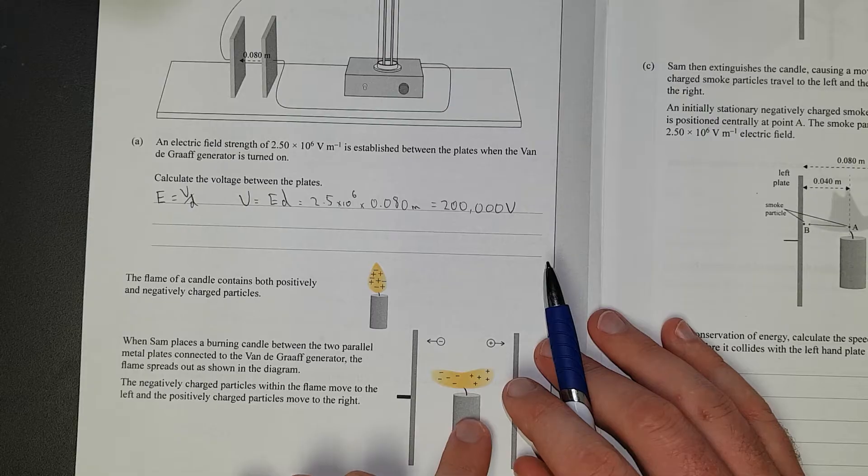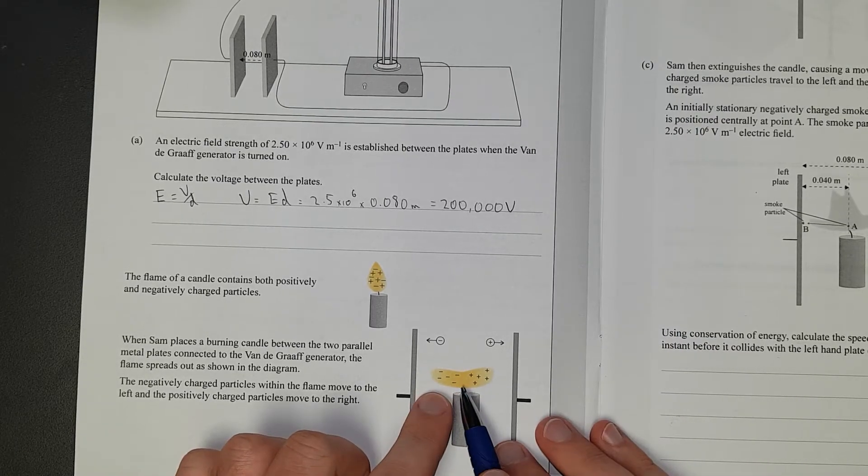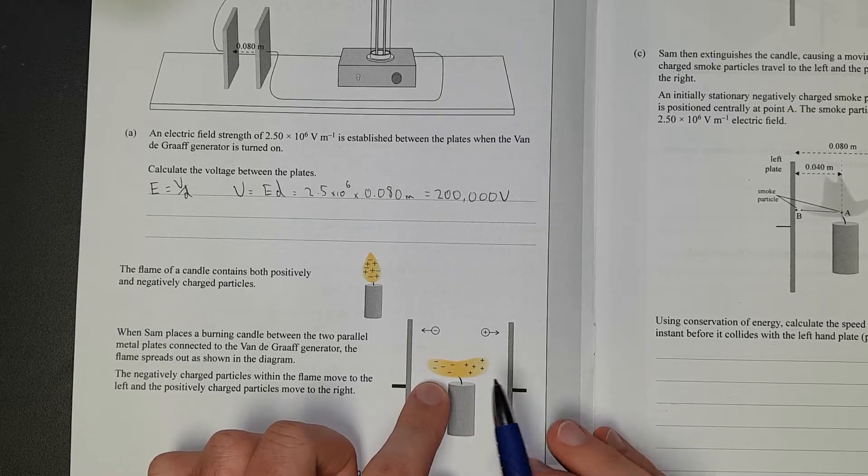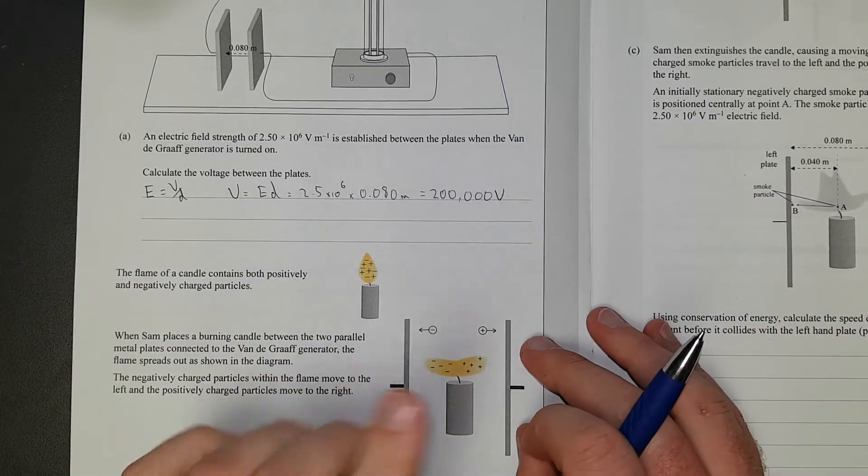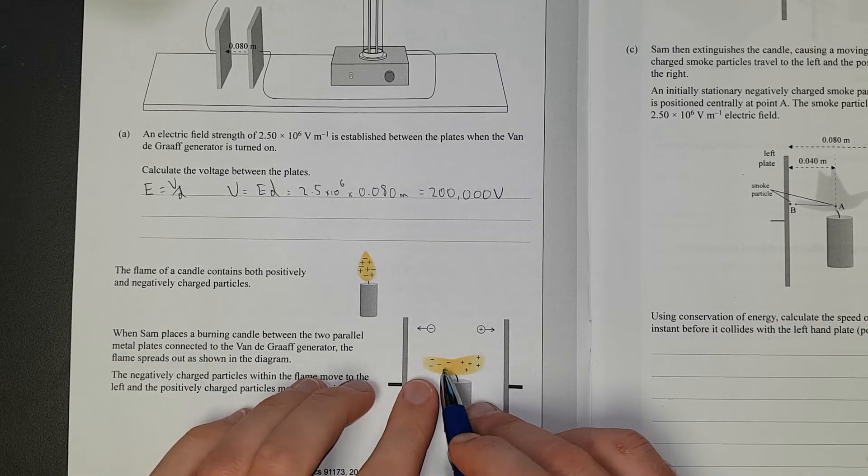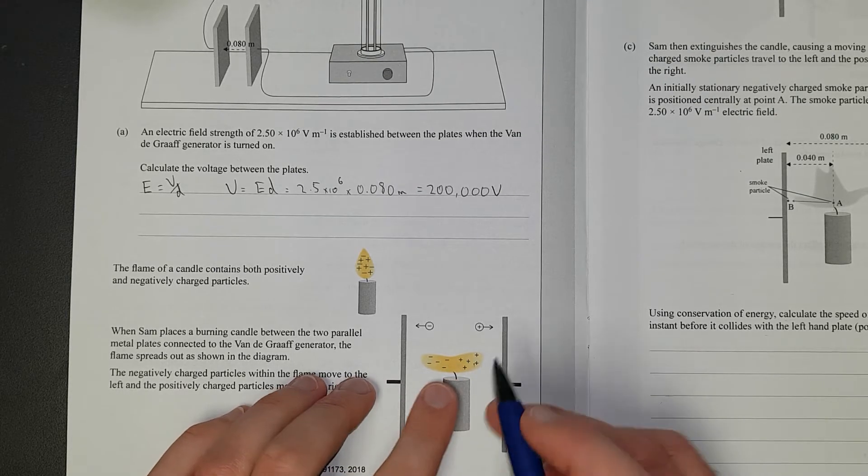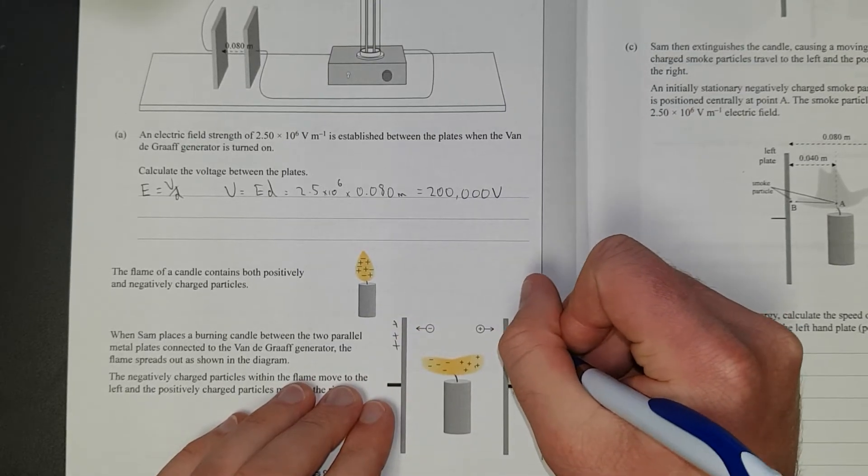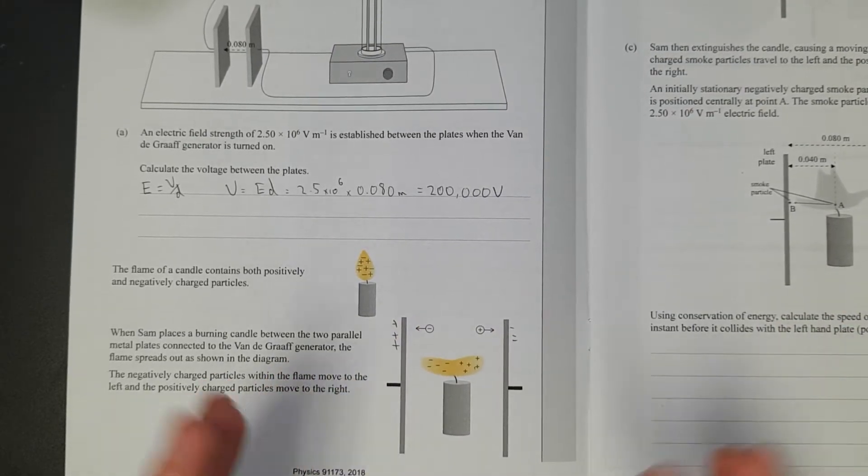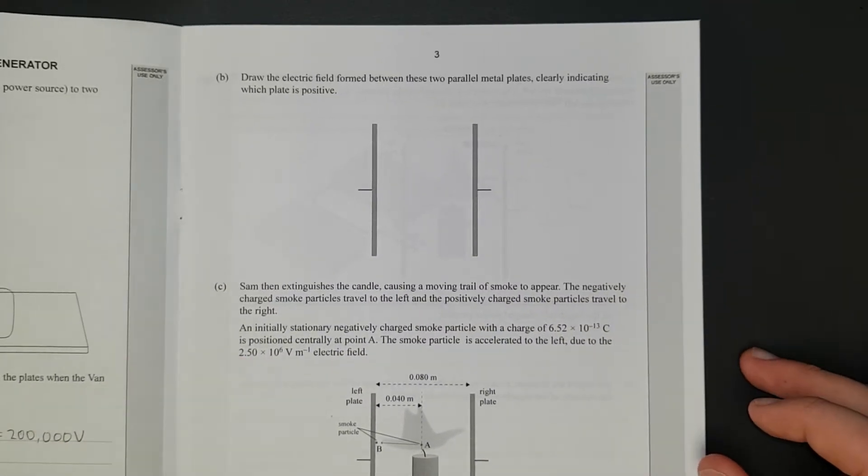You've got a flame, you've got to stick it between the two plates, you can read the instructions. But the crux of it is, flames are plasma. Plasma is made up of positively and negatively charged ions. It's an over-simplification, but whatever. Saying that the negative charged ions moving to the left, positively charged ions moving to the right, implies this must be positive, and this must be negative. You know, positive and negative attract each other, opposites attract.